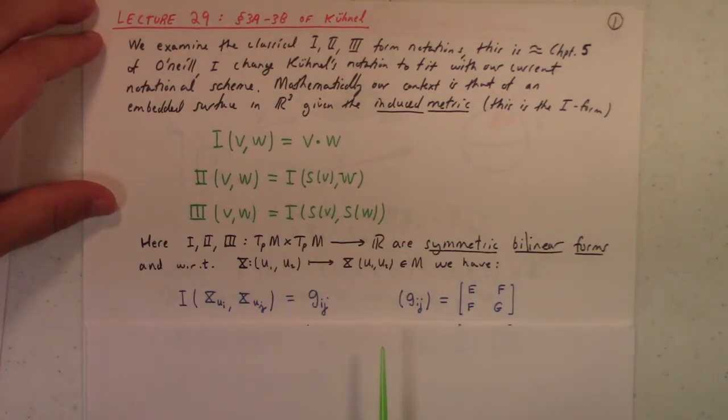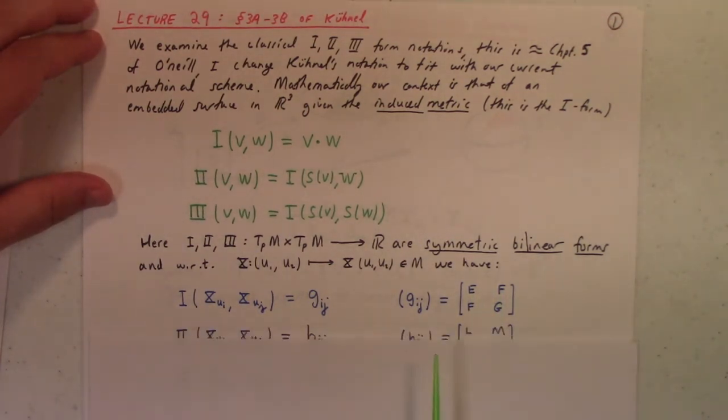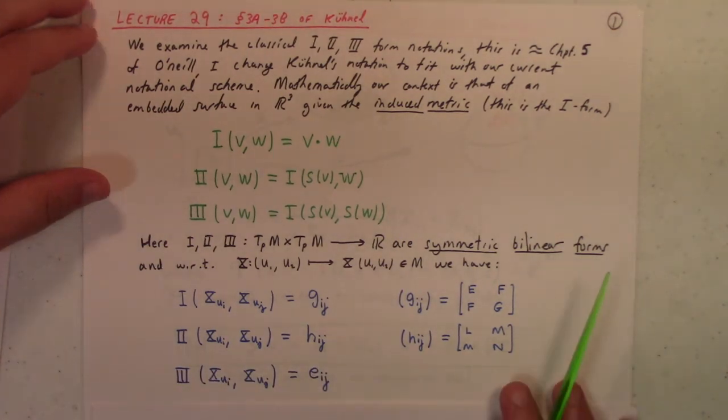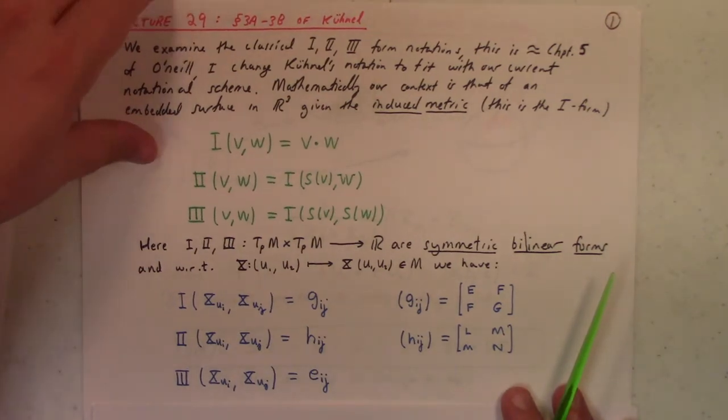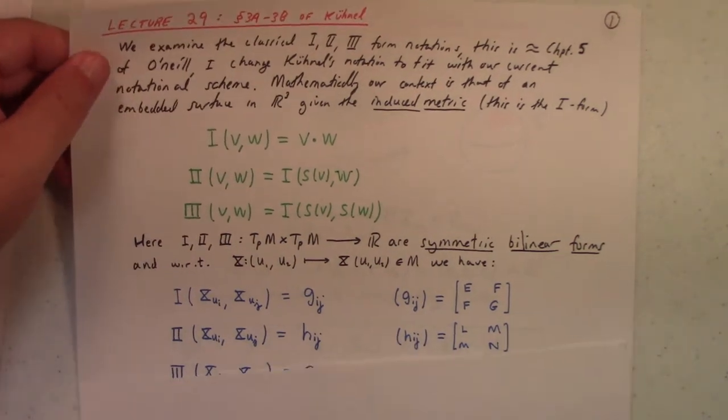So with respect to a particular patch, we have the following typical notations. G sub ij, that's the ijth component of the metric, as it's called, or the induced metric to be more precise. Here's the matrix of the metric, E, F, F, G, we've seen that before. And the matrix of the second fundamental form, L, M, M, N, and again we've seen that before. And he uses H, I, J for that. And then finally the third fundamental form, E, I, J, but I don't really do anything with that just yet. I just included it for completeness, but it really doesn't enter the discussion much.